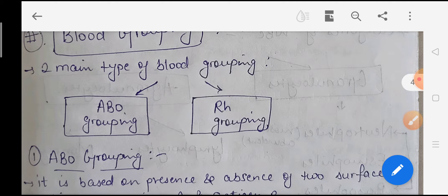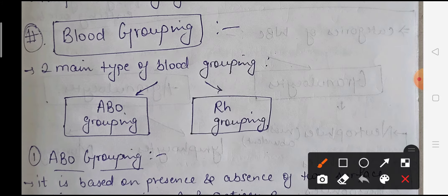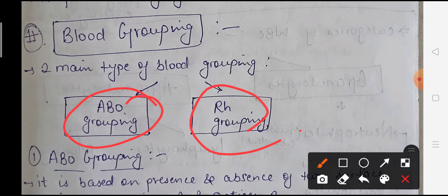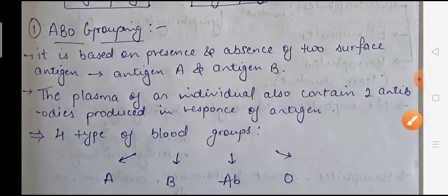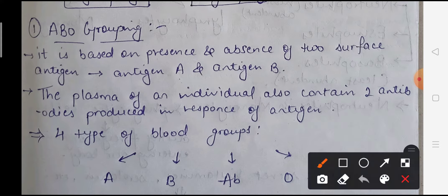Now we will discuss blood grouping. There are two types of blood grouping systems: ABO blood grouping and Rh grouping. ABO blood grouping is generally based on the presence or absence of two surface antigens on RBCs - antigen A and antigen B. Normally two types of antigens are seen on the surface of RBCs: antigen A and antigen B. Based on whether these antigens are present or not, the ABO blood grouping is divided.